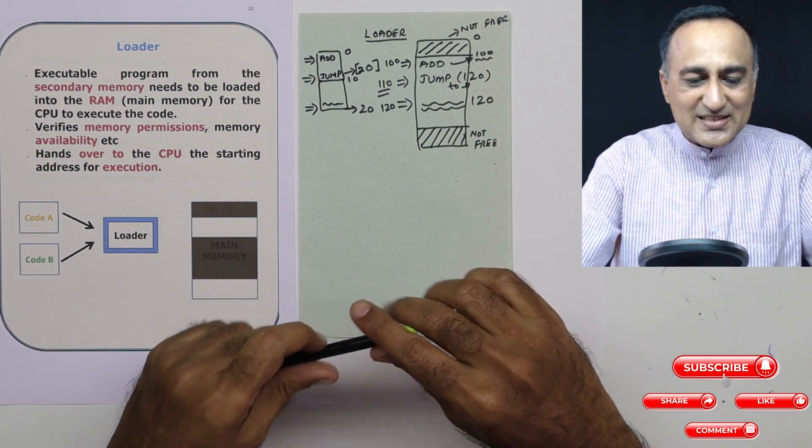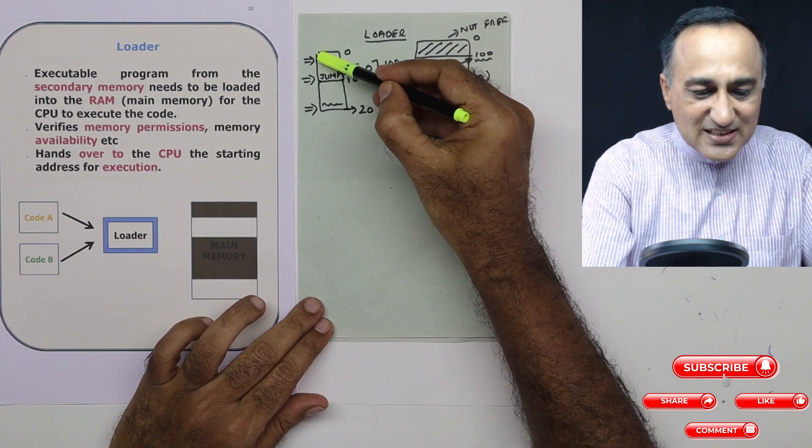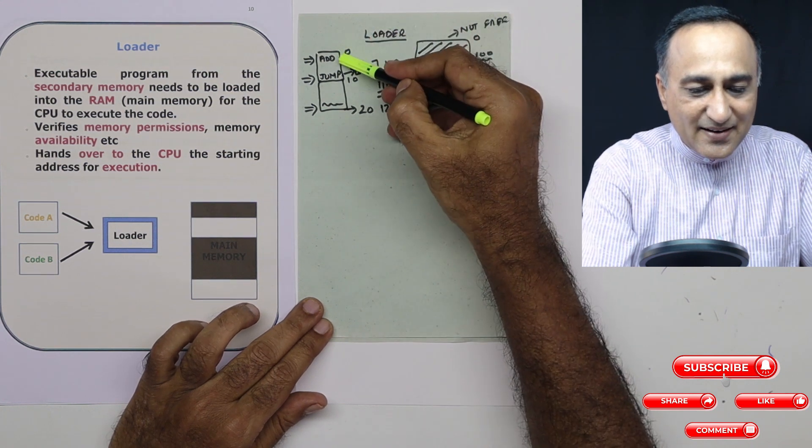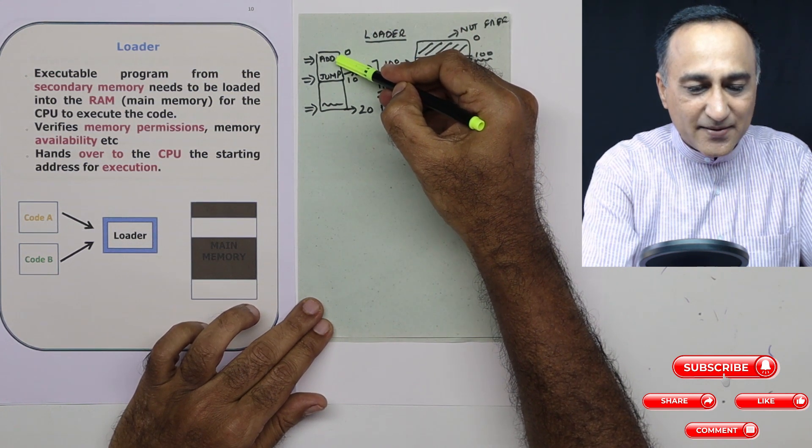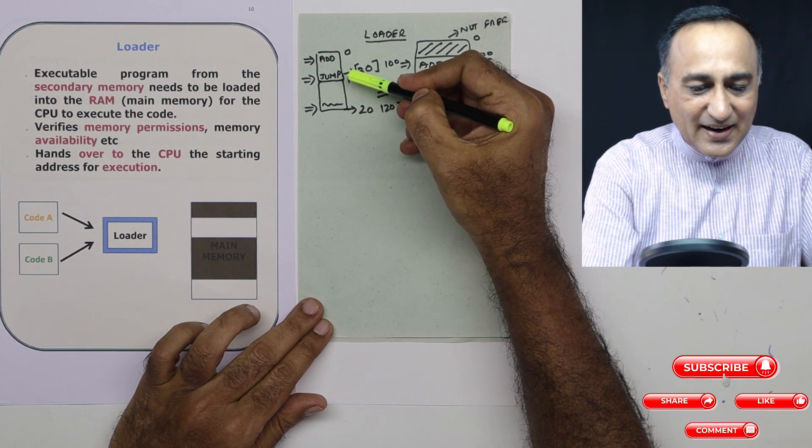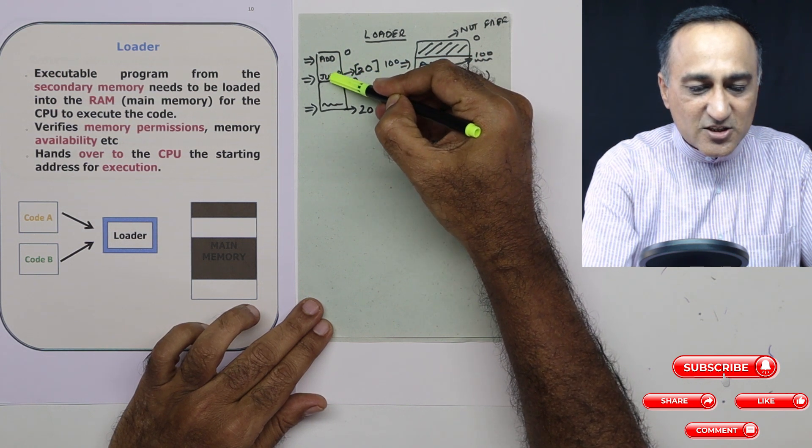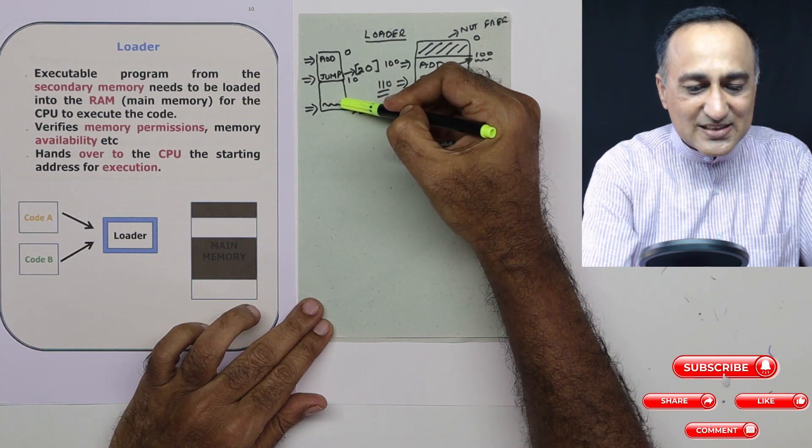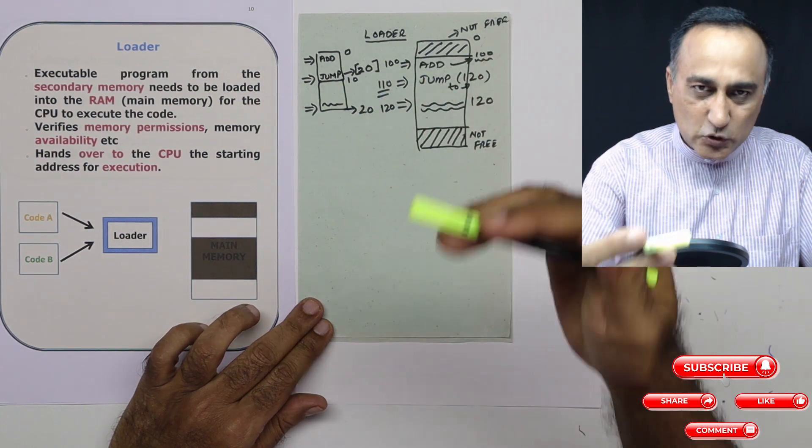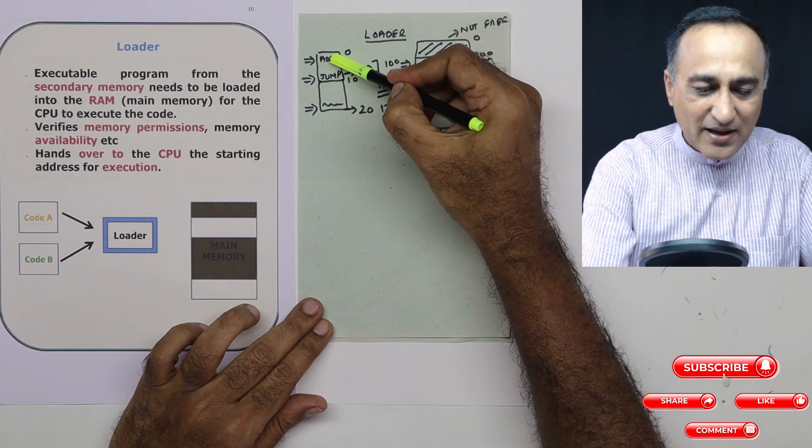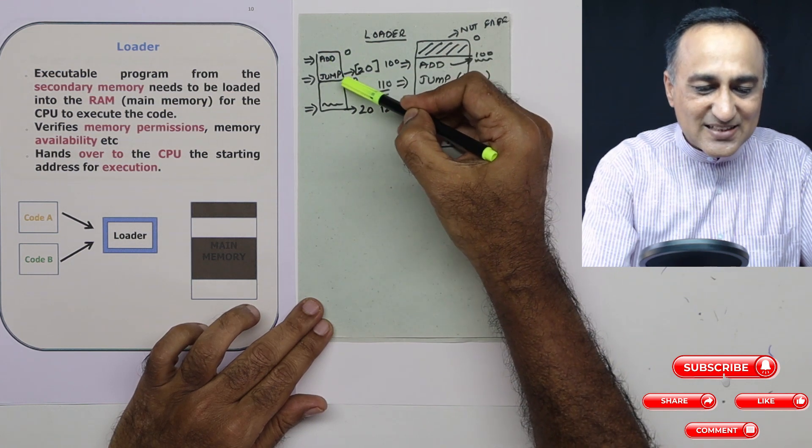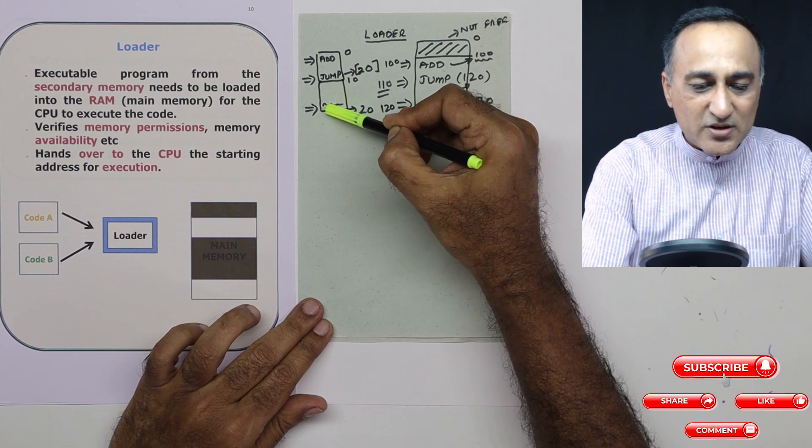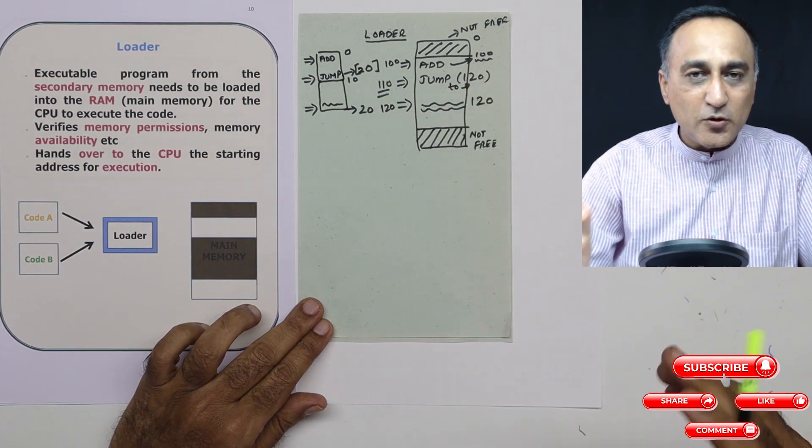Now let us say this is the code I have written. At address zero, I have an instruction add. And at address 10, I have an instruction called jump to location 20. And at 20, there is some other code. So just to summarize, at address zero I have the add instruction, at address 10 I have a jump to location 20, and whatever is the instruction at location 20, it will come to execute.